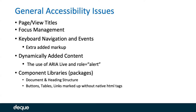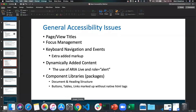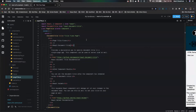Then component libraries: document and heading structure, buttons, tables, links marked up without native HTML tags. Component libraries and packages that people download directly from NPM or Yarn cause major issues within your project and make it very difficult to get to an accessible application. With that, I'm actually going to jump out of this PowerPoint slide and jump into this application I've created. This application is actually public — if you go to Google and search 'React Ally Example CodeSandbox' you can access this project. It's totally open to anybody to use.